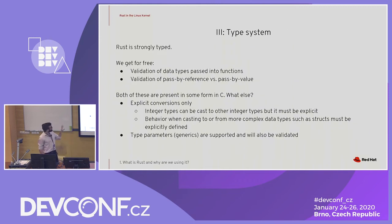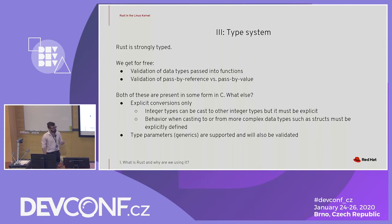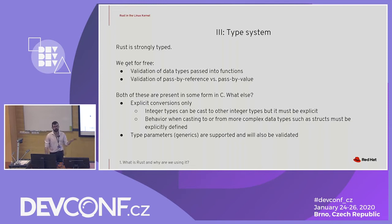Rust is strongly typed so we get validation of data types passed into functions and validation of pass-by-reference versus pass-by-value, but both of those things can already be done by C. What else does Rust give us that we don't get in C? Some of these things are going to be explicit conversions only — we're never going to have a wiggly kind of type casting system. We actually have to explicitly say how we're going to convert from one type to another, which really avoids some undefined behavior.